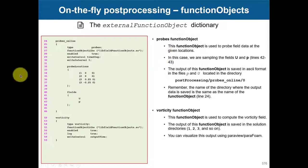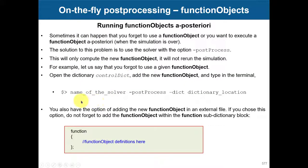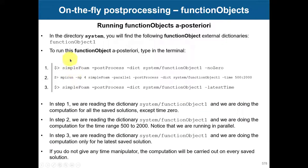Something important: sometimes you run a simulation and forgot to put in a function object. You can also do it a posteriori. To do it a posteriori, you create an external file, put your function object there, and then run the solver with the option minus postProcess. This reads only the function object without running the simulation again. You can run it in parallel with no problem.